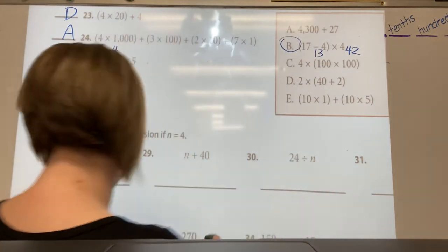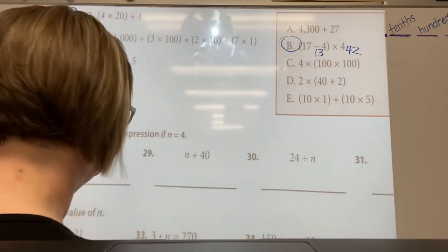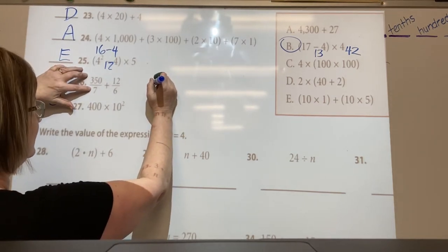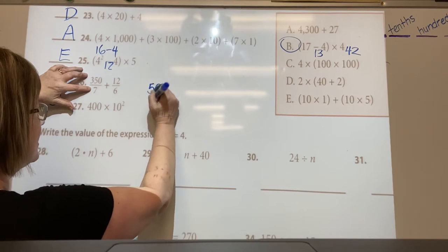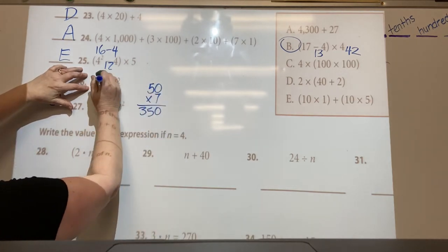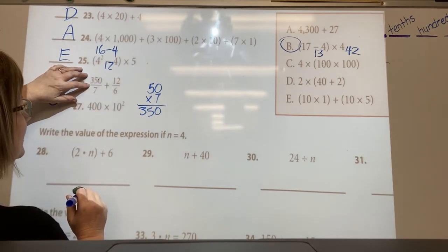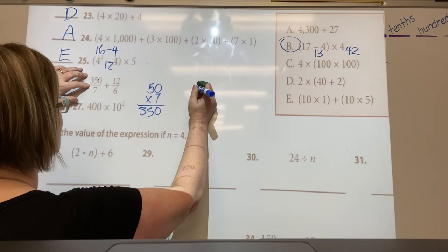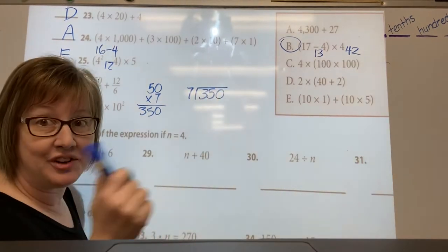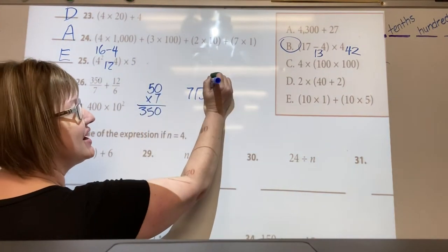B has to be twenty-six, but what did I do wrong? 350 divided by seven is 50, because 50 times seven is 350.